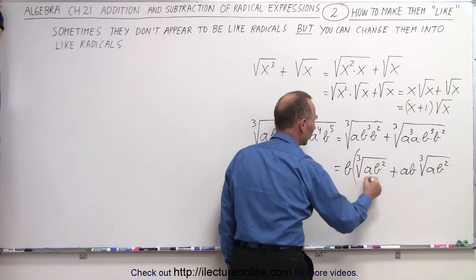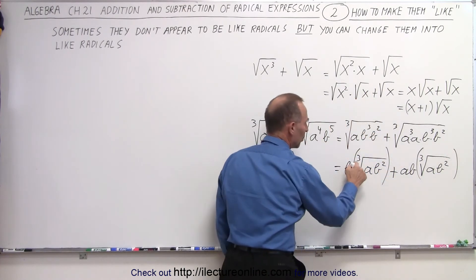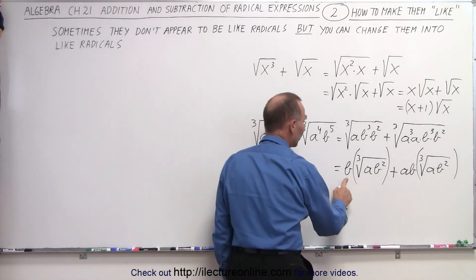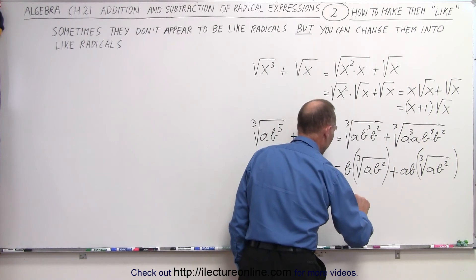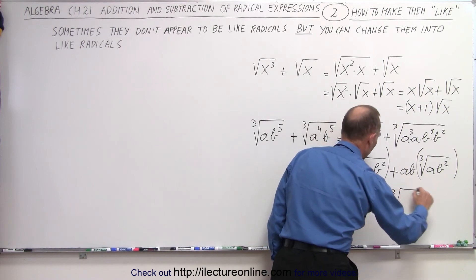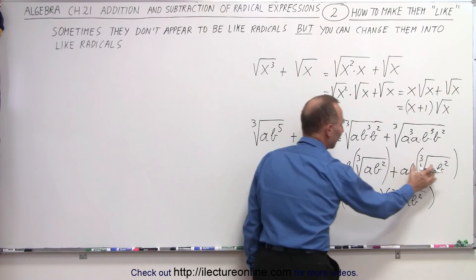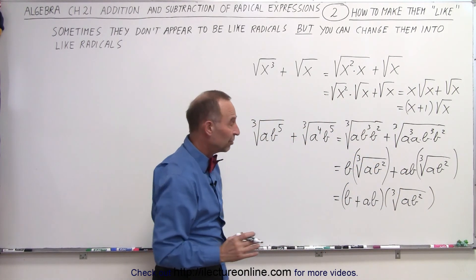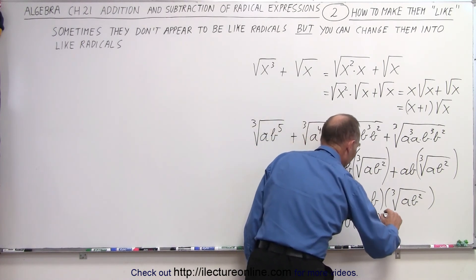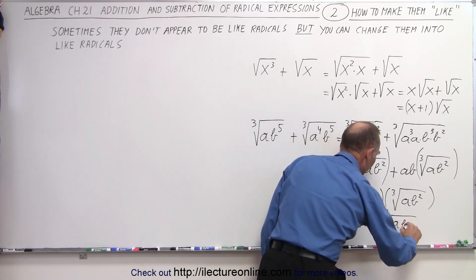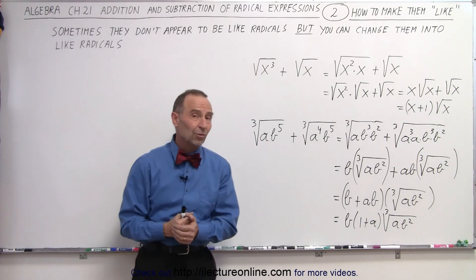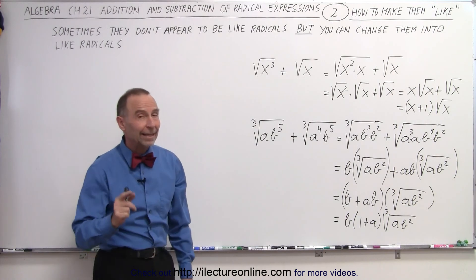Now, if I put parentheses around it just to make it easier to see, both the index and the radicands are now the same, so I can add the two together. Here I have b of them and here I have a times b of them, so this is b plus a times b times the cube root of a b squared. I can also factor out a b, so I can write this as b times 1 plus a times the cube root of a b squared. Essentially, you can see that if you change the radicand, it makes it possible to add or subtract if you can make them look the same. And that is how it's done.